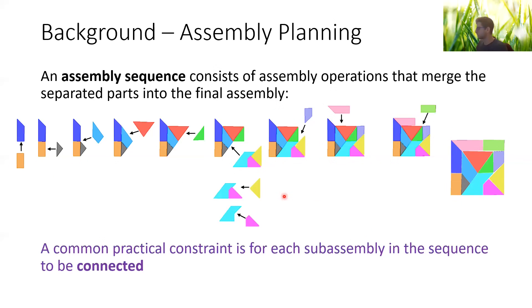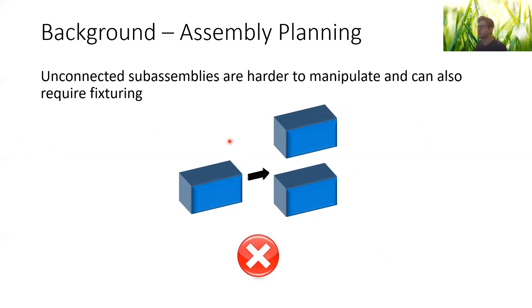A common practical constraint in assembly planning is to have each sub-assembly in the sequence be connected. The motivation behind this constraint is that it's harder to manipulate sub-assemblies that are not connected. For example, if we have a disconnected sub-assembly, we might need another hand to grasp it, or we might need some fixturing to keep the two parts in a fixed position relative to each other. So in general, we require this connectivity constraint.